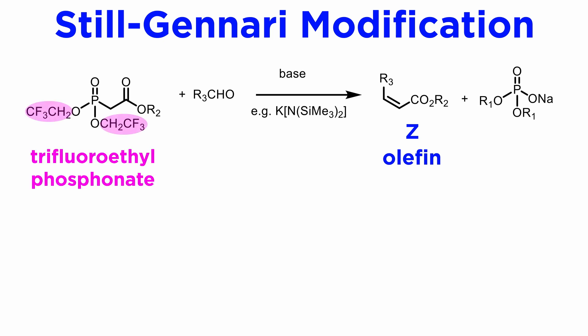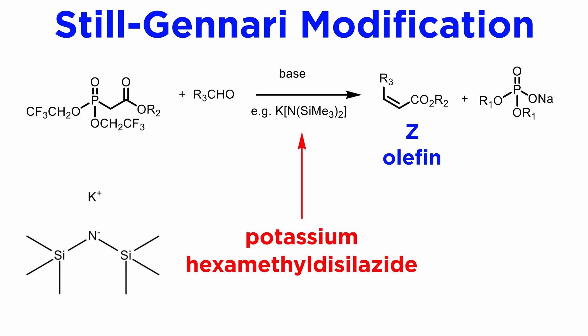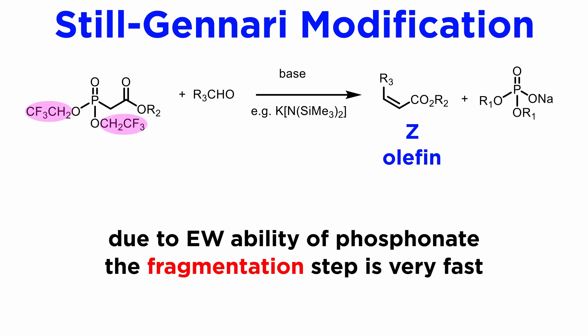The main difference between the HWE reaction and the Still-Gennari modification is the use of trifluoroethyl phosphonates instead of ethyl or methyl phosphonates. Typically, the base used is potassium hexamethyldisilazide. The reasons for the selectivity are not well understood, but it is assumed that due to the excellent electron-withdrawing ability of the fluorine-substituted phosphonate, the second step — the fragmentation — is quite fast.